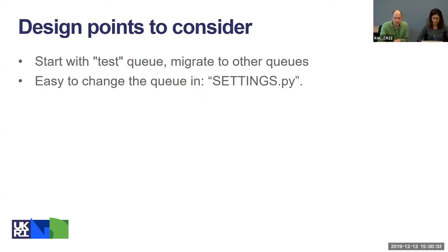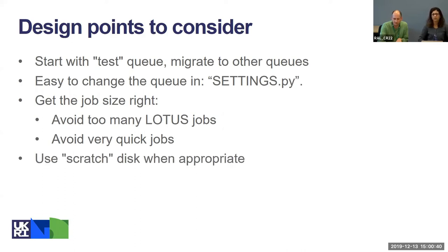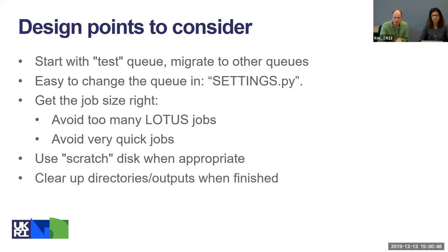A few design points: start with the test queue on Lotus, then migrate to other queues — within the framework it's easy to change the queue in settings.py. Try to get the job size right for the chunk sent to Lotus — you don't want too many very short-running jobs. Experiment to get jobs running for a sensible duration. When appropriate, use the scratch disk on Jasmine, and clear up any temporary files and directories when processing is finished.